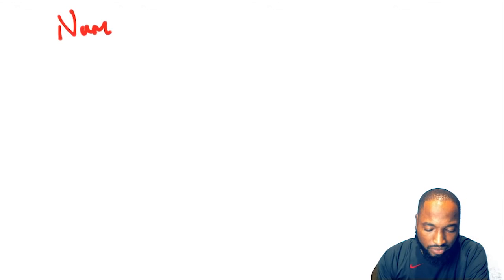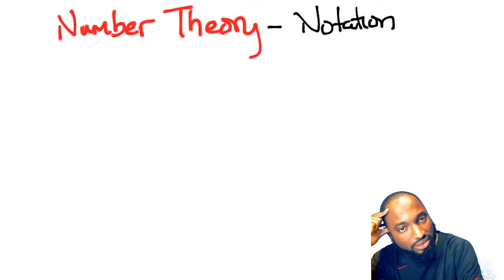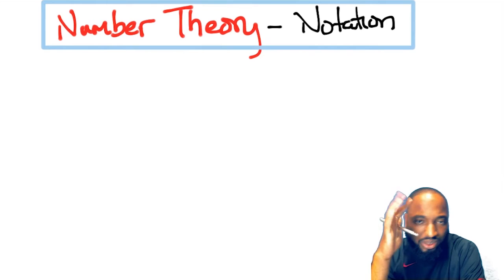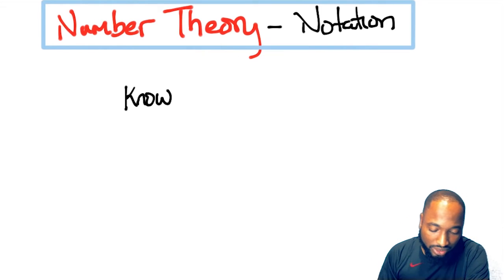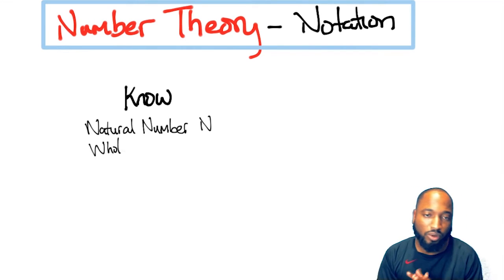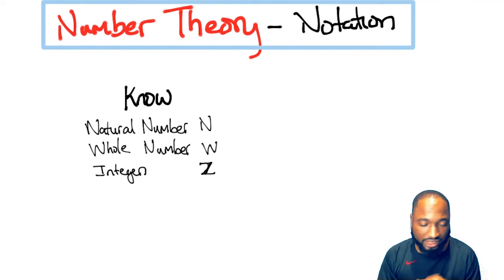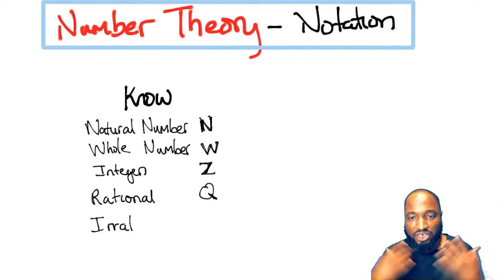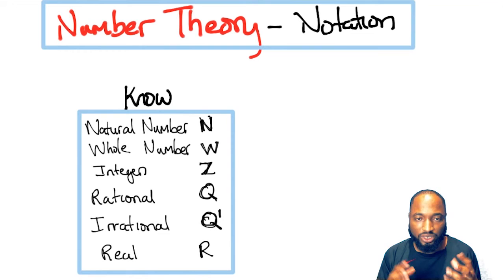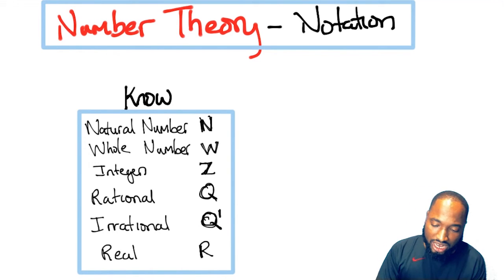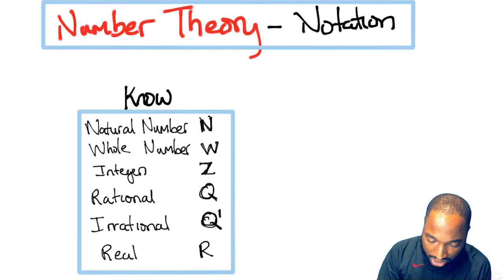For each different type of number, there's a way that we represent it in mathematics. In number theory, there's a way to represent each of the numbers we spoke about in the last video: natural numbers, whole numbers, integers, rational numbers, irrational numbers, and real numbers. There's a way to represent them, especially natural, whole, and integers. Let's jump into it.